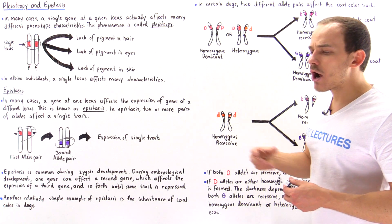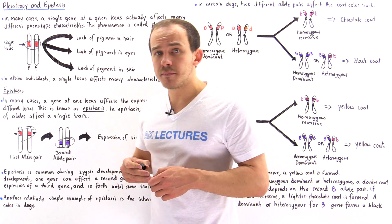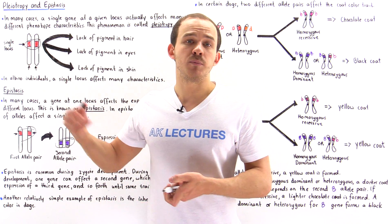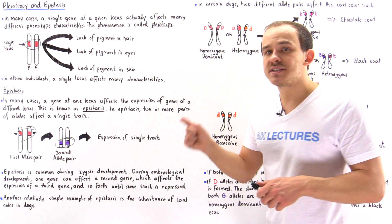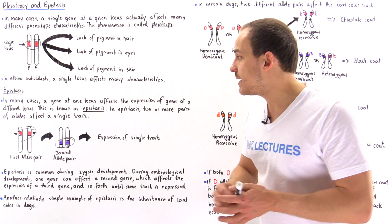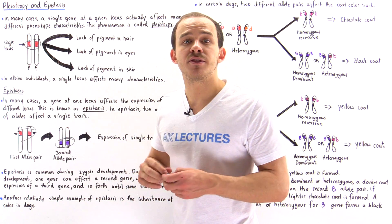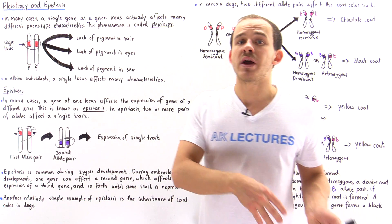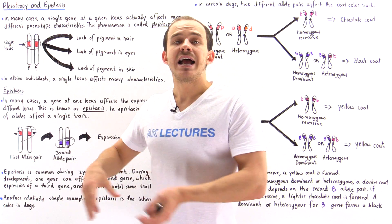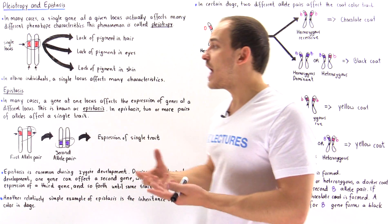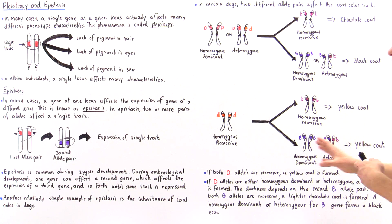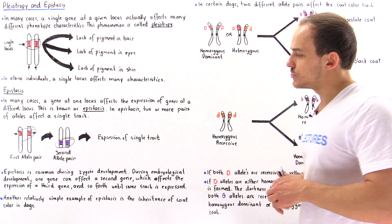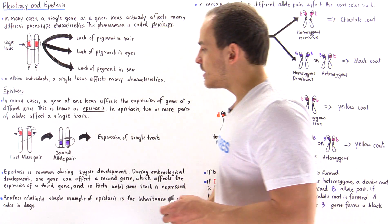Recalling our discussion on embryological development, when the zygote is formed it begins to develop into the adult organism. During embryological development, one gene can interact with a second gene, which interacts with a third gene, and this process continues until a particular trait is expressed. Embryology is a rather complicated case because of the many different types of interactions, so we're going to look at a much simpler case in this lecture.